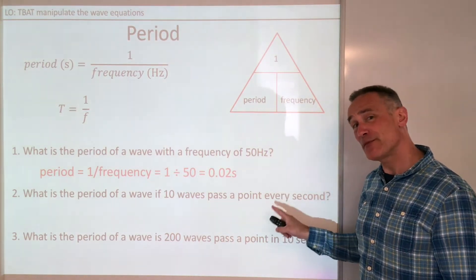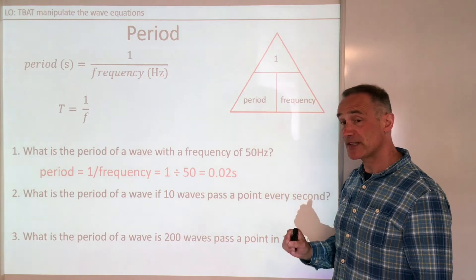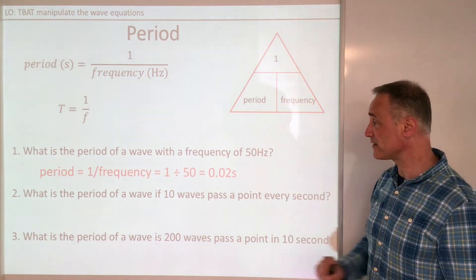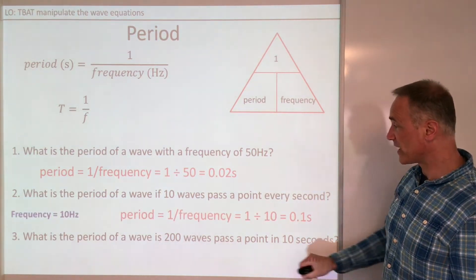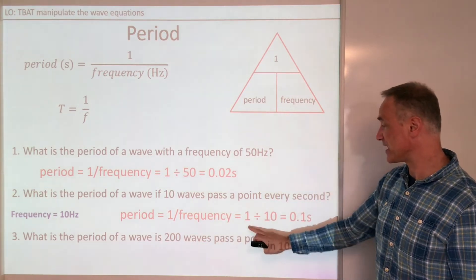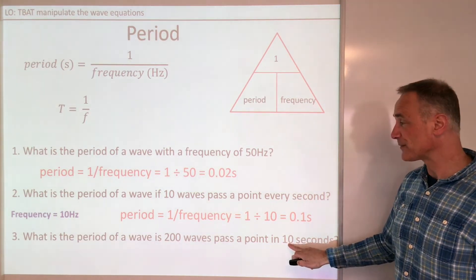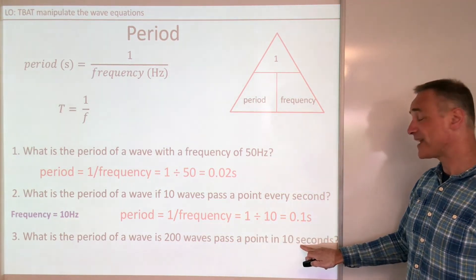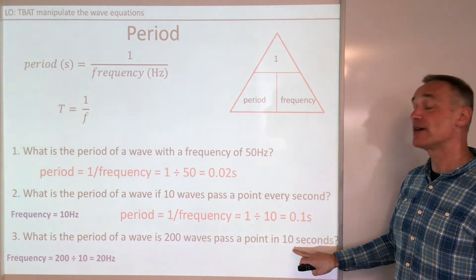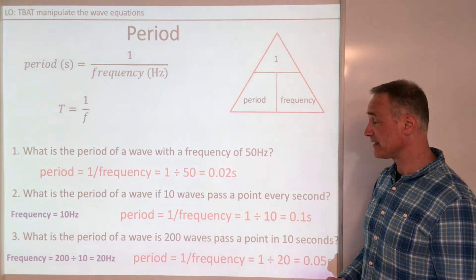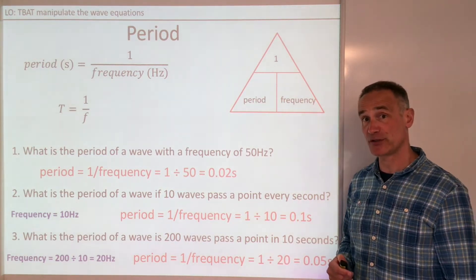The next one — some of you might be puzzled at first because it doesn't look like you're given the frequency. But remember, frequency is the number of waves passing a point every second. We've got 10 waves every second, so the frequency is 10. Therefore period is 1 divided by 10, which is 0.1 seconds. Finally, the last one: 200 waves passing a point in 10 seconds, so frequency is 200 divided by 10, which is 20 waves per second. Period is 1 over 20, which is 0.05 seconds.